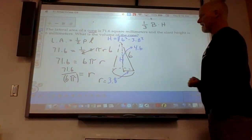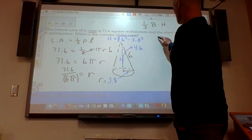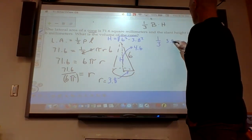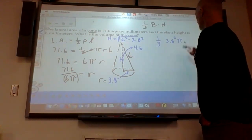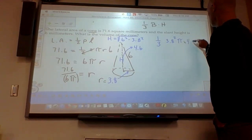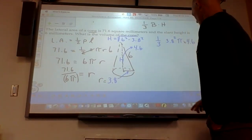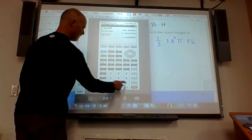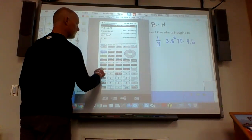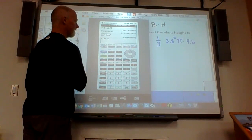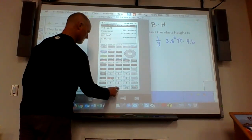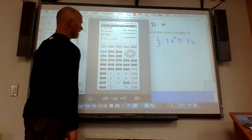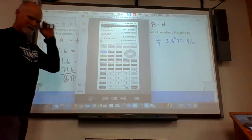Now, I have everything that I need for this formula. So 1 third base area, that would be 3.8 squared pi, and then times our 4.6. So if I calculate that, I'm going to go 3.8 squared, second pi, and then times 4.6. And then I'm going to divide by 3 because of multiplying by a third, and I get 69.55.